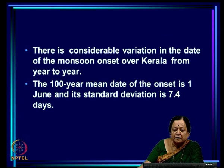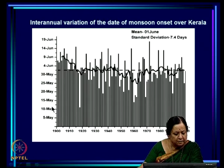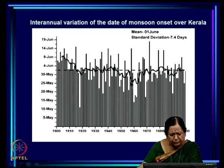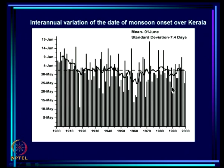The inter-annual variation of the date of monsoon onset over Kerala has ranged from mid-May to mid-June. From 1900 to 2000 it varied between late May and about June 6th — less than two standard deviations. The frequency distribution of onset dates shows the mode between 31st May and 2nd June, close to the mean of June 1st. About 25 percent of years had onset within 31st May to 2nd June, and about 50 percent of years had onset between 28th May and 5th June.